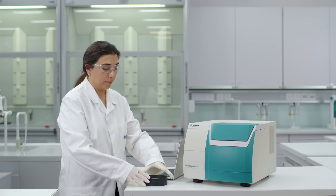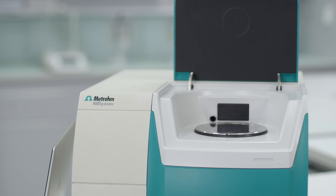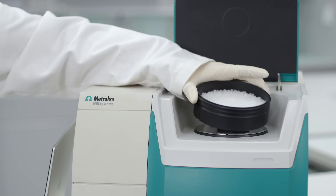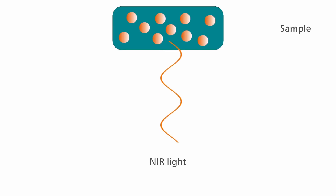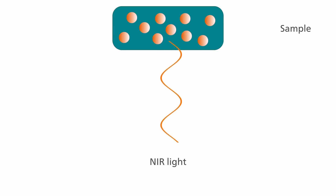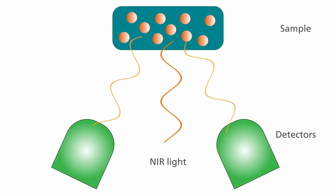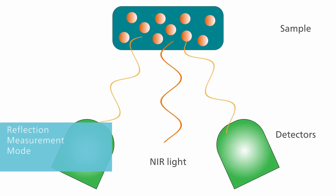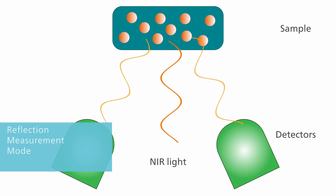Solid samples are typically measured with the diffuse reflection mode. The NIR light penetrates into the sample and interacts with it. Parts of this light are absorbed, while unabsorbed NIR light is reflected back to the detector.